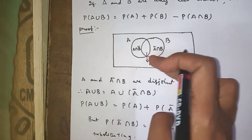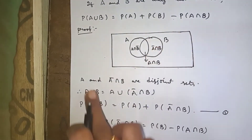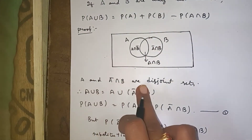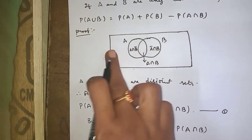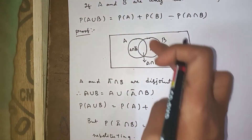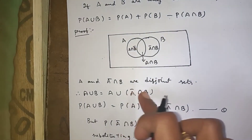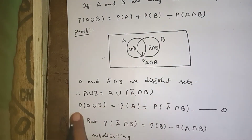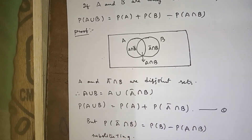If you observe the diagram, A means the complete set A. The region Ā ∩ B is the right half only. A and Ā ∩ B are disjoint sets. Therefore we can write A ∪ B = A ∪ (Ā ∩ B). Taking probability on both sides, P(A ∪ B) = P(A) + P(Ā ∩ B), since these two are disjoint sets.